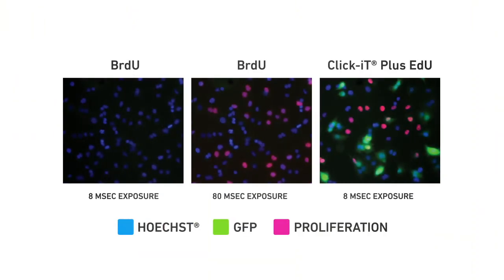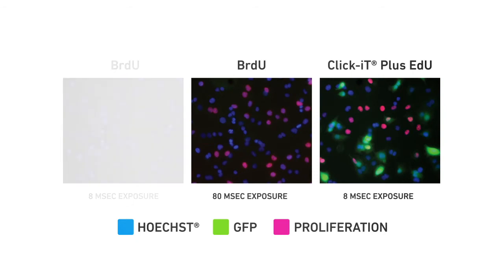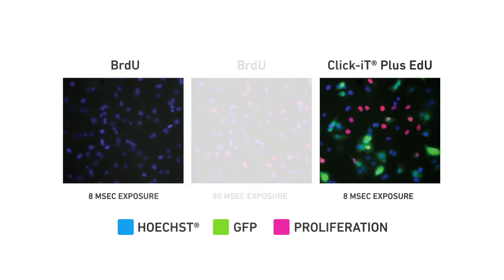The Click-IT Plus reaction attaches a fluorescent azide dye to each EdU alkyne group in the newly synthesized DNA. The harsh DNA denaturation treatment required for the BrdU method results in the loss of GFP, or the green fluorescent signal. However, using the Click-IT Plus EdU proliferation assay retains GFP. Additionally, comparing BrdU and the Click-IT Plus EdU assay using the same exposure time demonstrates how much stronger the pink proliferation signal is from the Click-IT Plus EdU assay.